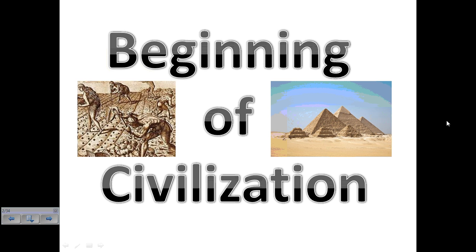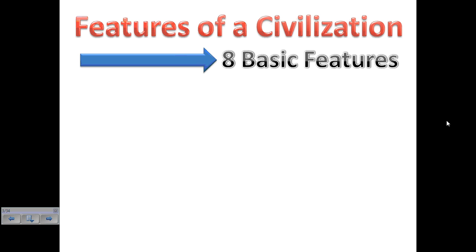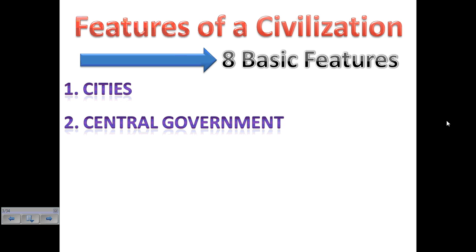Let's get started — the beginning of civilization. When a group of hunter-gatherers start to become more advanced, they adopt features, and eight basic features will make them an actual civilization. They'll go from being a hunter-gatherers group to a full-fledged civilization. The first feature on the list is cities — once we see a civilization having cities, we know they're becoming more advanced. The second major feature is central government: as cities emerge there's a level of hierarchy, someone is in charge, and there's some sort of organization of government and protection.